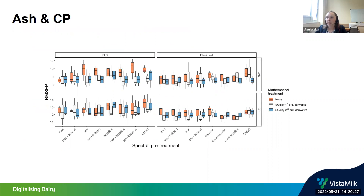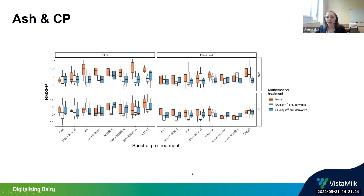Looking at the models developed for ash and crude protein: the top panel shows ash results, the lower panel shows crude protein results, and the most striking comparison is between PLS (left) and elastic net (right). For ash, there's not much difference between different models and it's difficult to find one combination that outperforms the rest. For crude protein, we can already see that we achieve lower RMSEP when we choose elastic net over PLS.